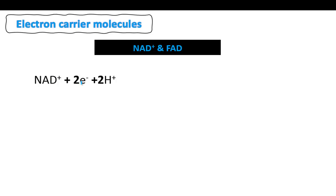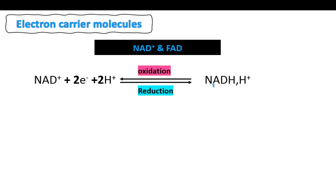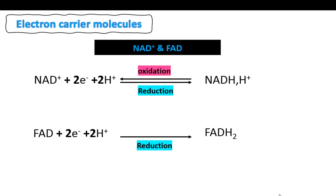NAD+ will react with two electrons and two protons. When NAD+ accepts electrons it gains electrons, so it is going to be reduced into NADH. We call this kind of reaction reduction. The reverse reaction — where NADH loses electrons and protons — is called oxidation. Remember: reduction is gaining electrons, oxidation is losing electrons. In the case of FAD, the same thing happens: it gains two electrons and two protons and is reduced into FADH2.